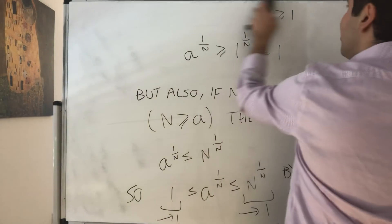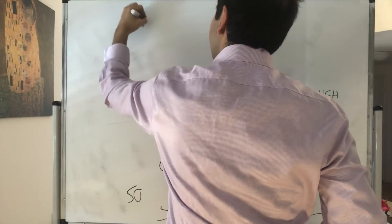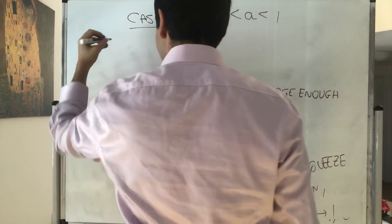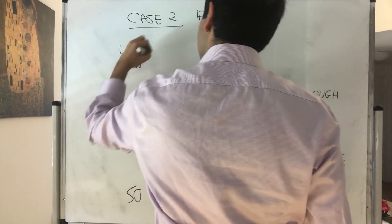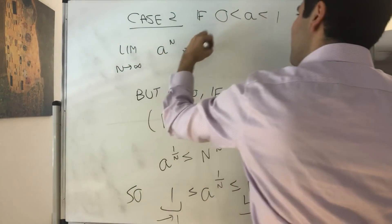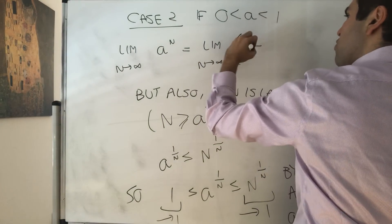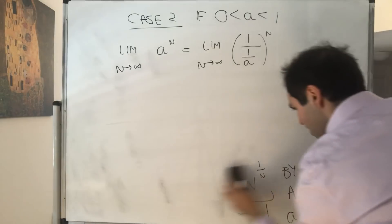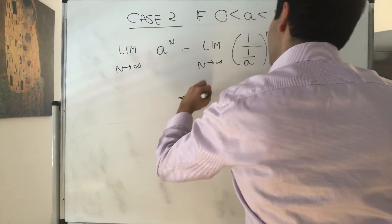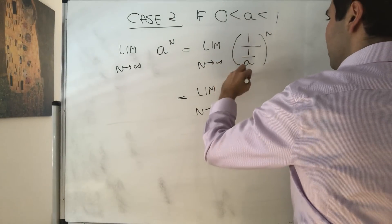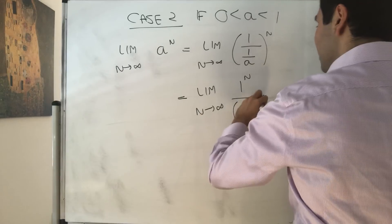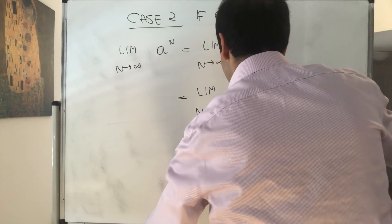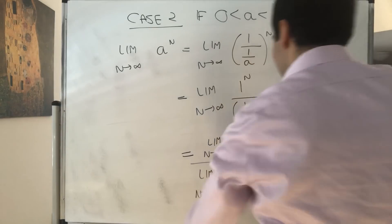And if it's less than 1, so case 2. If a is between 0 and 1, then there's this really neat trick. The limit n goes to infinity of a to the n, that's the limit as n goes to infinity of 1 over 1 over a to the n. And then by the ratio of limits, that's the limit as n goes to infinity of 1 over the limit as n goes to infinity of 1 over a to the n.